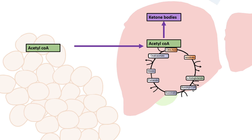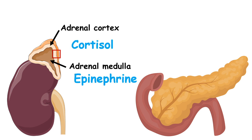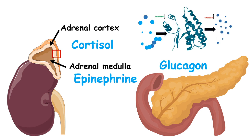During starvation, ketone bodies are the main source of energy. Additionally, many other hormones are secreted during the fasted state — for example, the adrenal cortex secretes glucocorticoids such as cortisol, the adrenal medulla secretes epinephrine, and the pancreas secretes glucagon from the alpha cells. All of these hormones secreted in the fasted state ensure that protein catabolism increases and protein anabolism decreases. If protein catabolism is increased, the amino acids released can be used to produce glucose via the gluconeogenic pathway. In this way, through hormonal regulation, all these organs are communicating with each other under the fasted state to keep our physiology going.